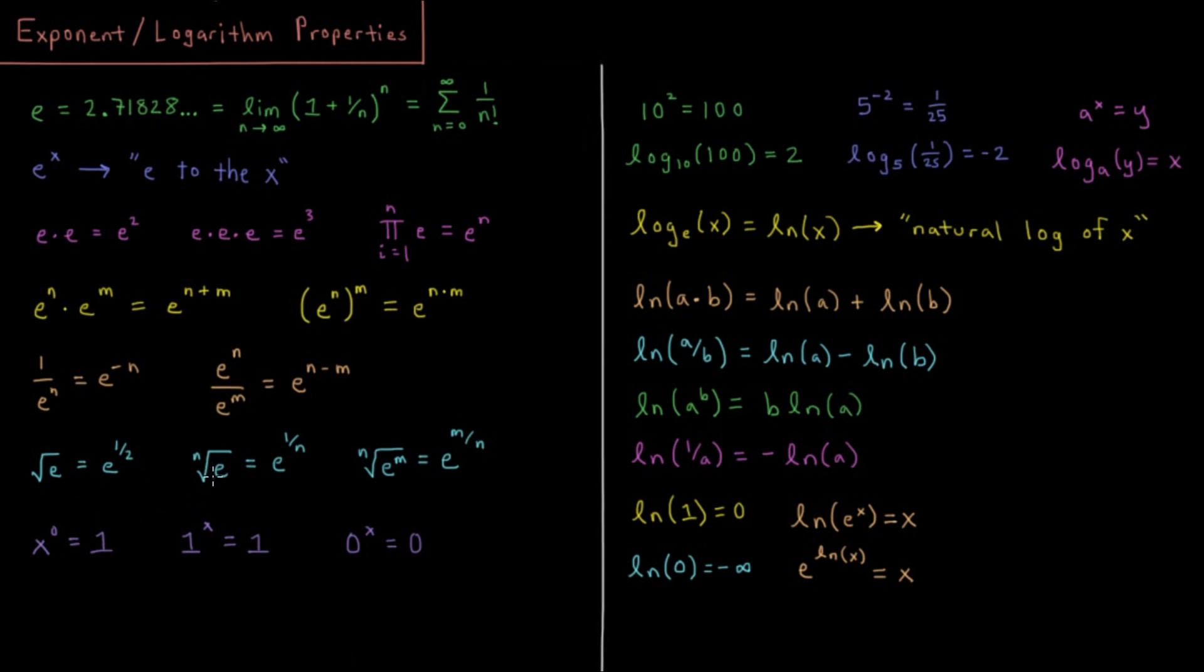I could also have the nth root of E. You have to multiply this number n times by itself to get E, so that's E to the 1 over n. Or I have the nth root of E to the m, which is equal to E to the m over n.